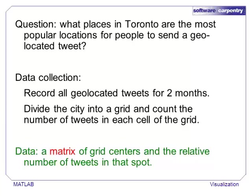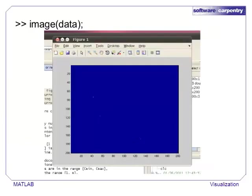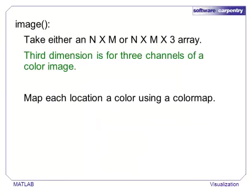Like many other data sets, this one is best thought of as a matrix. The simplest way to create an image in MATLAB is to call image and pass it a matrix. Unfortunately, this matrix isn't very amenable to imaging. We see a few pixels that are not dark blue and the rest is just the same color. Image takes either an n by m matrix or an n by m by 3 array. If the image is two-dimensional, then each element is treated as an intensity value. If it has three dimensions, then each pixel is described by three intensity values corresponding to three color channels.